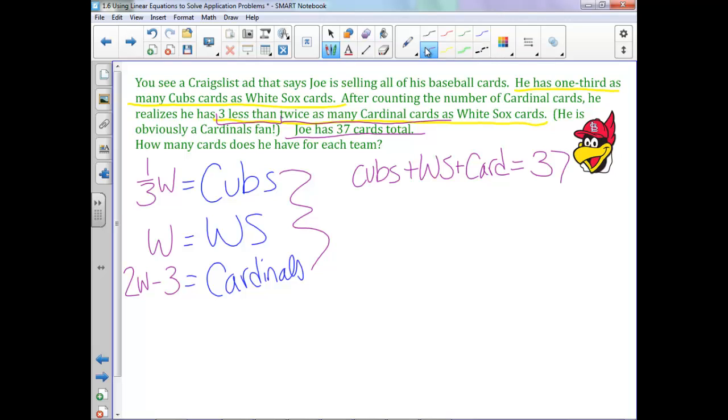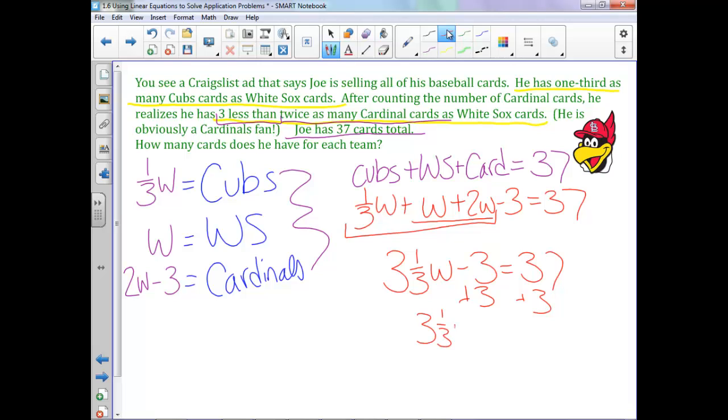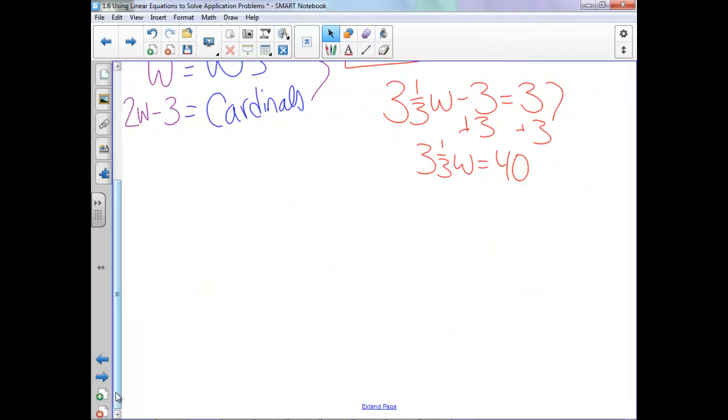So now let's substitute in our expressions that we already found. So for Cubs, we know he's got one-third W, he's got W many White Sox, and 2W minus three Cardinals. And now we'll just solve this. So when you combine our W's, 2W plus 1W is 3W, and 3W plus a third is just three and a third W. And then let's add our three to both sides, so we'll have three and a third W equals 40. Now it's difficult to divide by a mixed number, so let's go ahead and change this to an improper fraction. Remember to do that, you keep your denominator the same. And then it's three times three, which is nine, add one is ten. And if you look, ten over three is three and a third, it's the right thing.